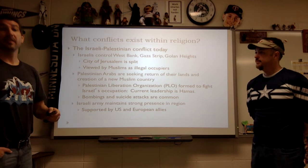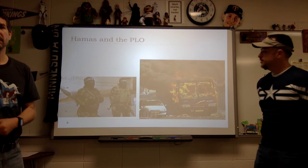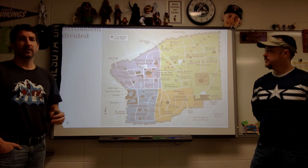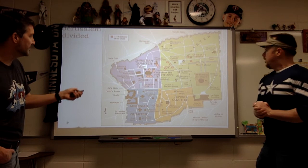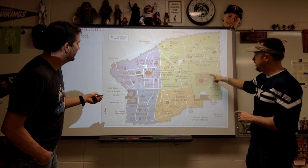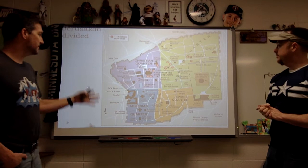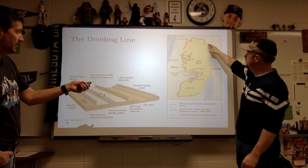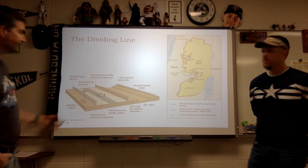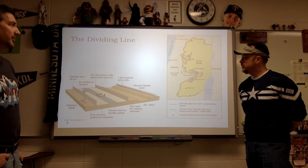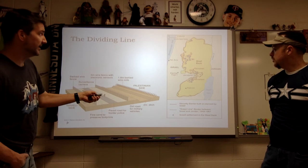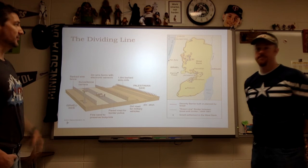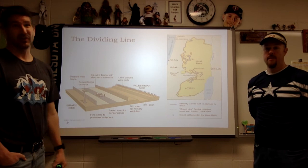Looking at Hamas and the PLO — Hamas is the governing body of the Palestinian government. Jerusalem is divided: there's the Church of the Holy Sepulchre, the Dome of the Rock, and the Western Wall — three major holy sites within blocks of each other. That's why things are divided. There's the walling off — here's Israel proper, then the West Bank, with Israeli settlements on the other side of the wall in the occupied area. This is very controversial and convoluted, with neither side recognizing the other's right to exist in that space.